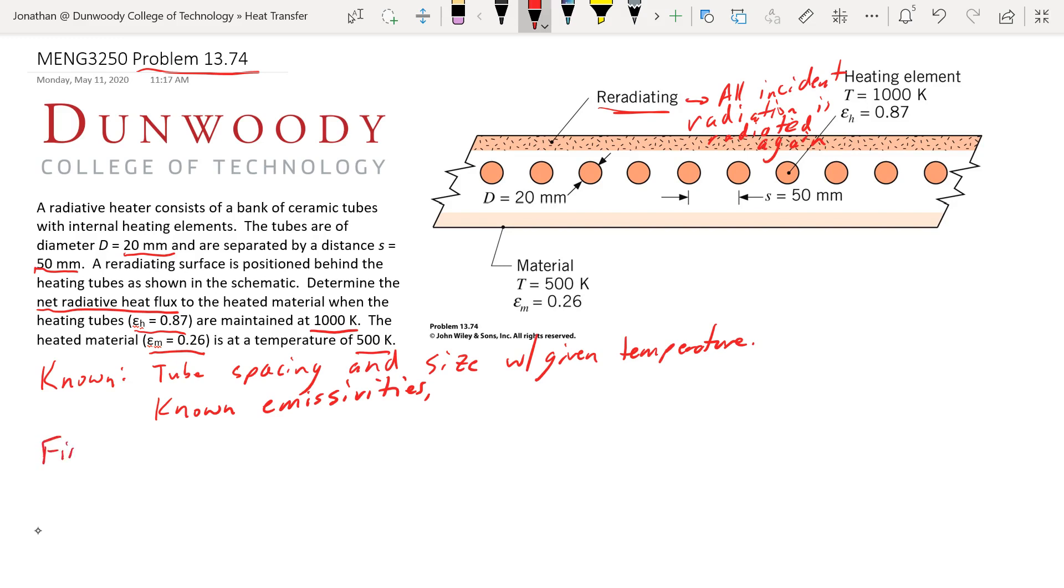What are we looking for? We're looking for the heat flux net to material, trying to figure out how much heat we get by radiation on this surface down here.